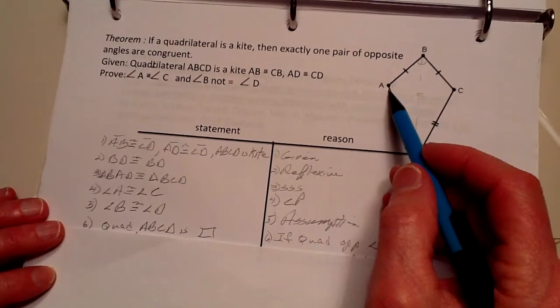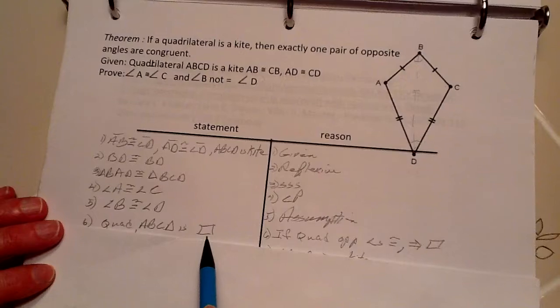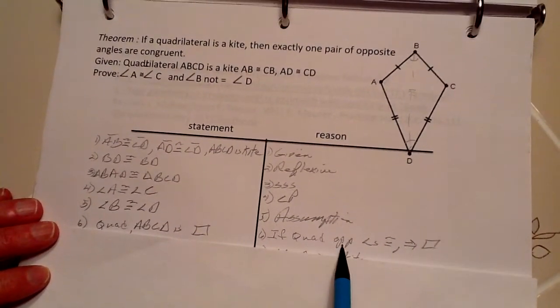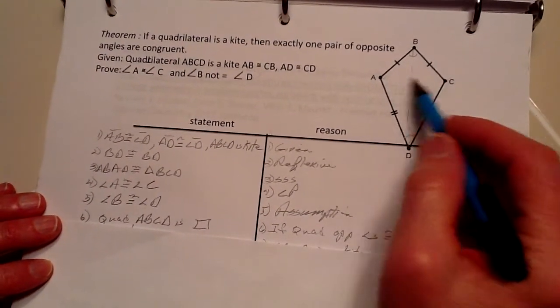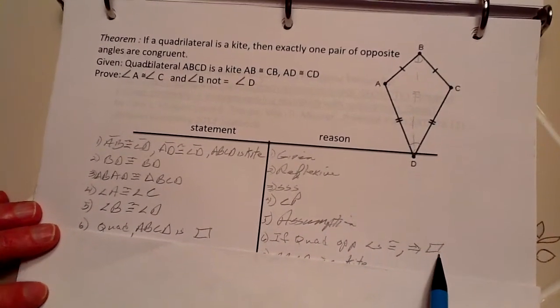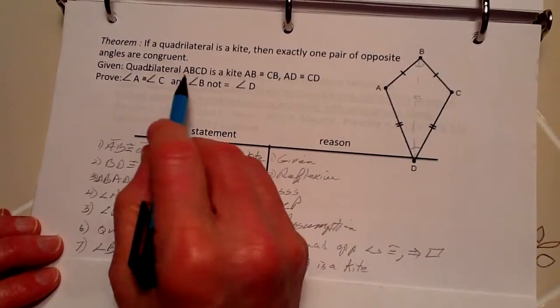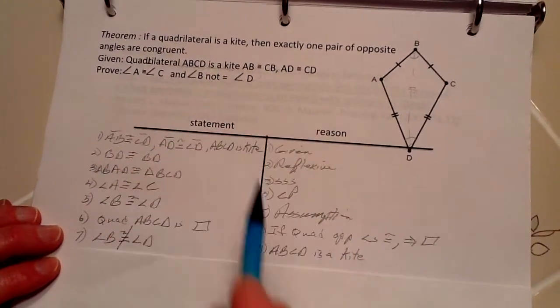this quadrilateral ABCD is going to be a parallelogram, because if the opposite angles are congruent, then it's a parallelogram. Well, we know it's not a parallelogram because we were just told in the given that it is a kite.